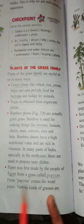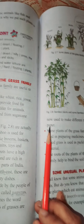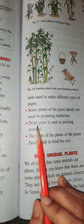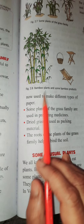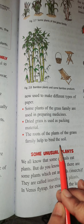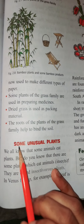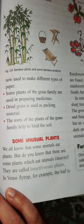And paper — the paper on which we write — was first made by the people of Egypt from a grass called papyrus, and the word 'paper' also comes from 'papyrus'. There are many different types of grass now used for making different types of paper. Some plants of the grass family are also helpful in preparing medicines, dried grass is used as packing material, and the roots of these plants help in binding and holding the soil.